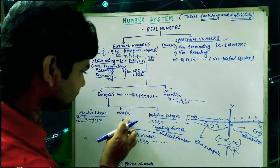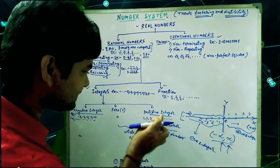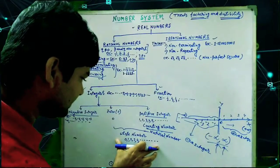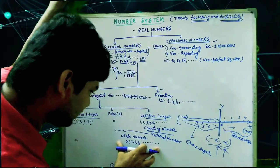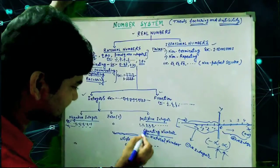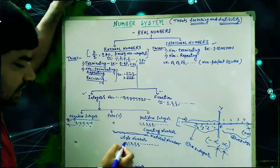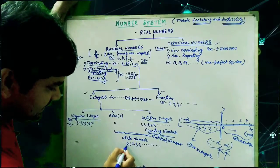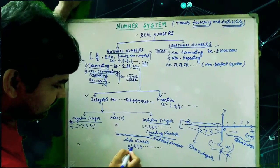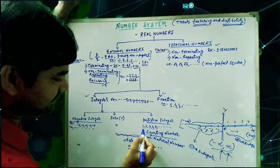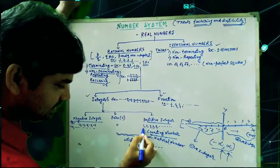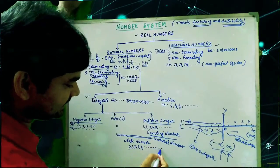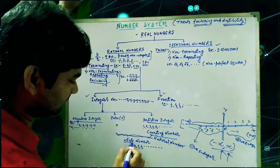Next, zero and the positive integers together are called whole numbers. That means whole numbers belong to the category starting from 0, then 1, 2, 3, 4, 5, etc. This set is called whole numbers.